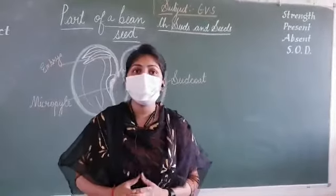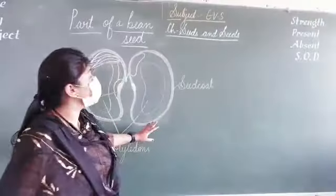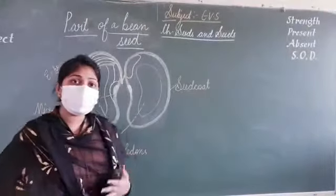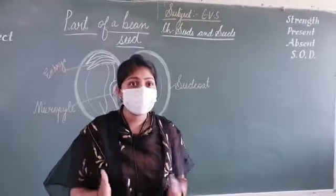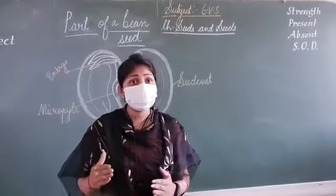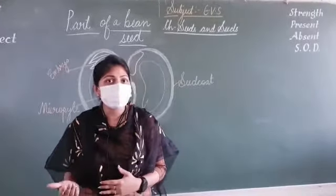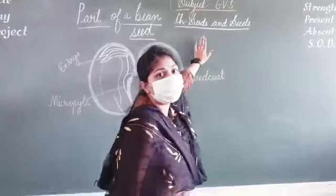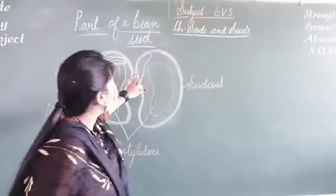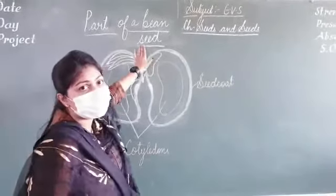Good morning children. Today we are going to discuss the parts of the seed. As in the previous class, we discussed the different parts of a plant, the life cycle of a plant, and the different ways through which a plant can grow. So you can see, this is chapter number 5, Seeds and Seeds, and we are going to discuss the parts of a bean seed.